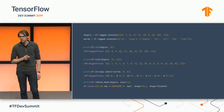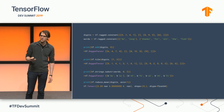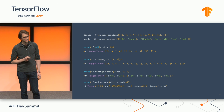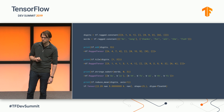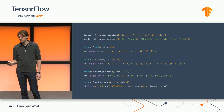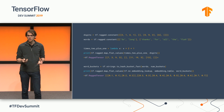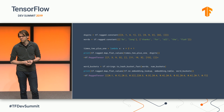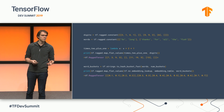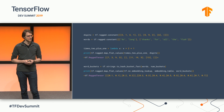Ragged tensors are natively supported by over a hundred TensorFlow core ops, ranging from math ops through string handling to reductions. And, if you need to operate on each value in a ragged tensor, we provide a native map function. You can use this to apply ops or even entire subgraphs to every value in a ragged tensor.